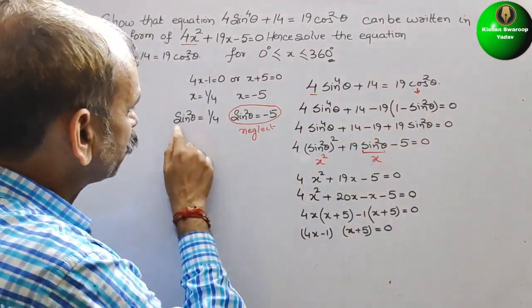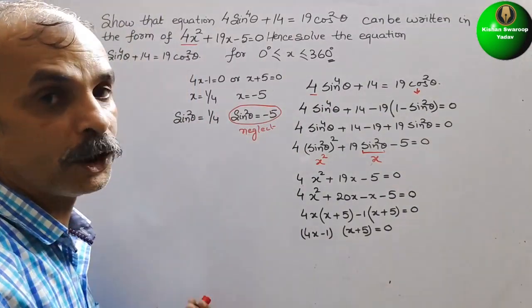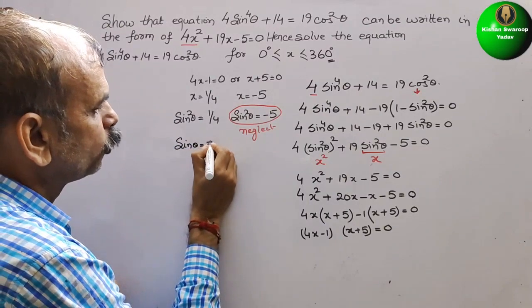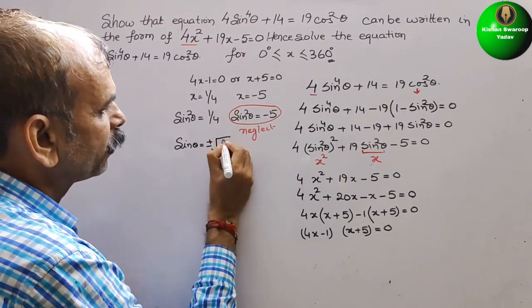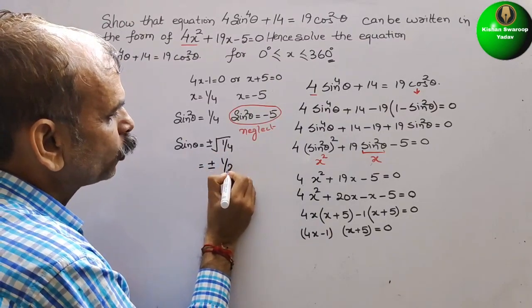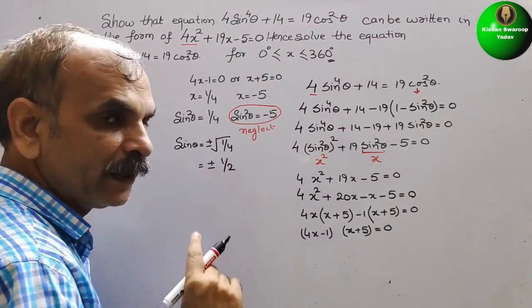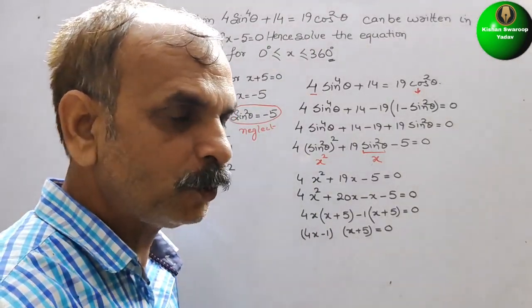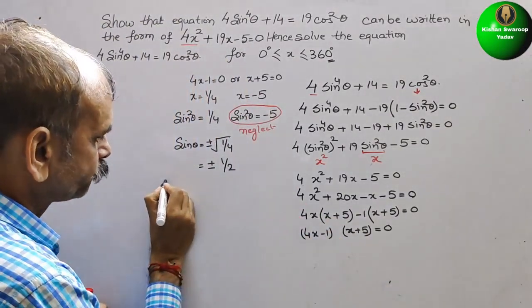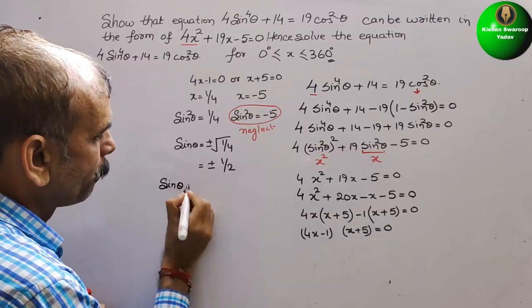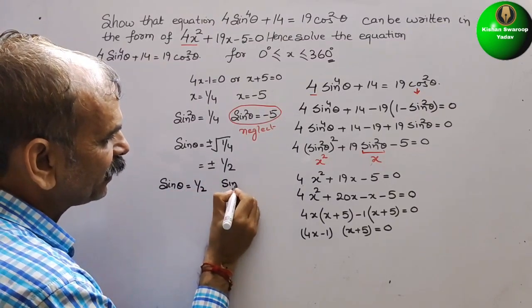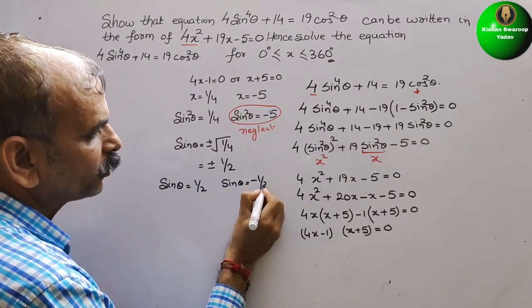So sin²θ = 1/4. Therefore sinθ = ±√(1/4) = ±1/2. We take sinθ = +1/2 for one case and sinθ = −1/2 for another.